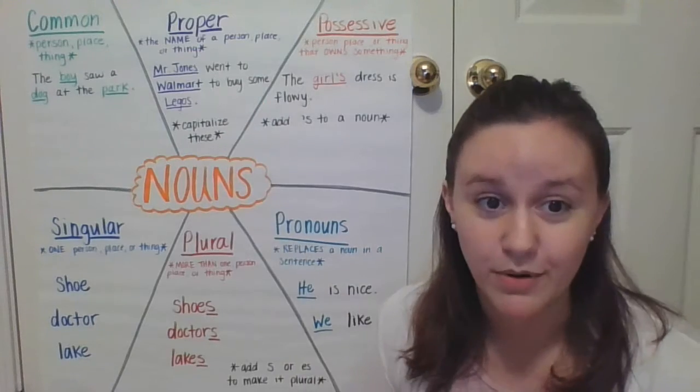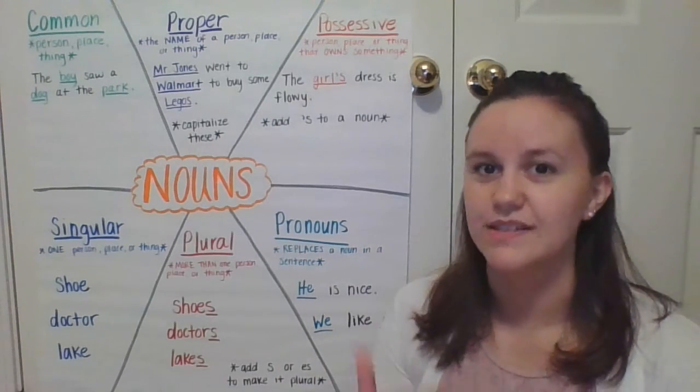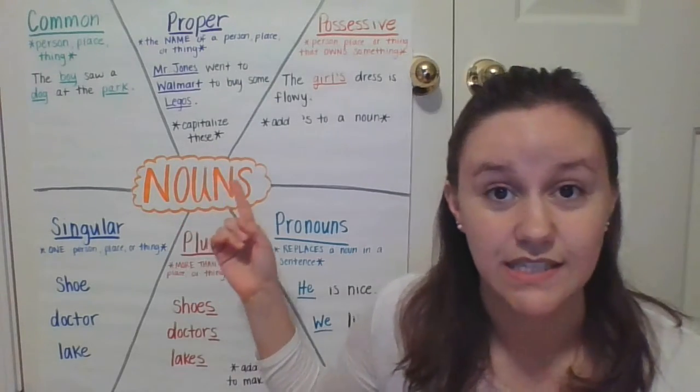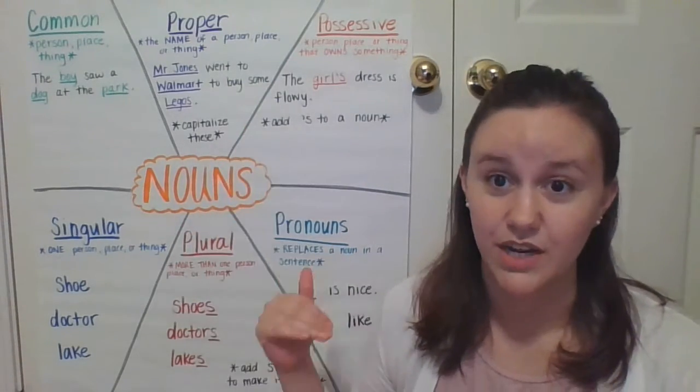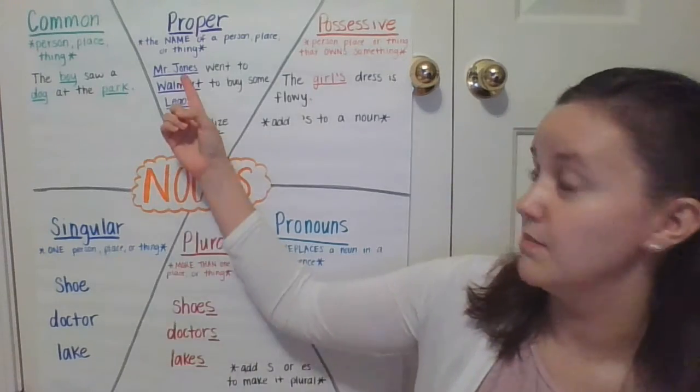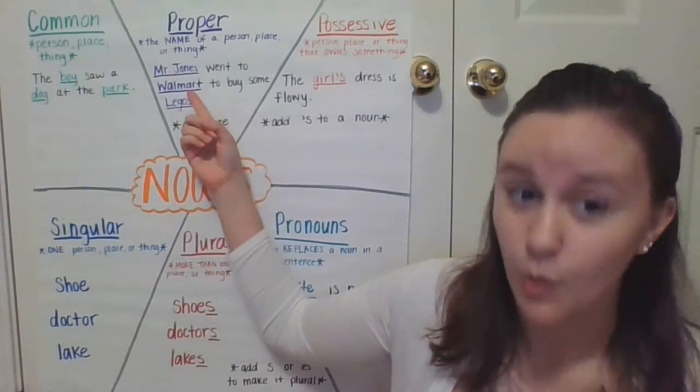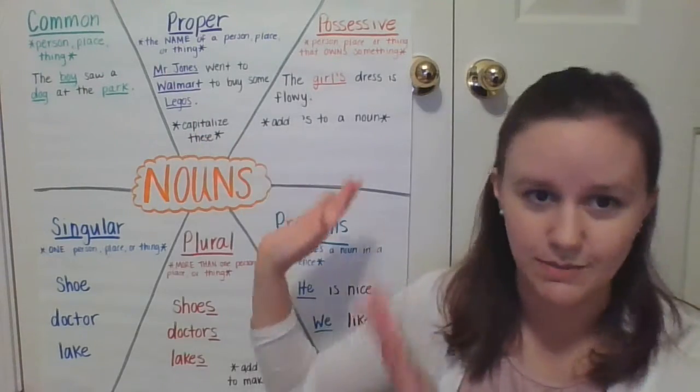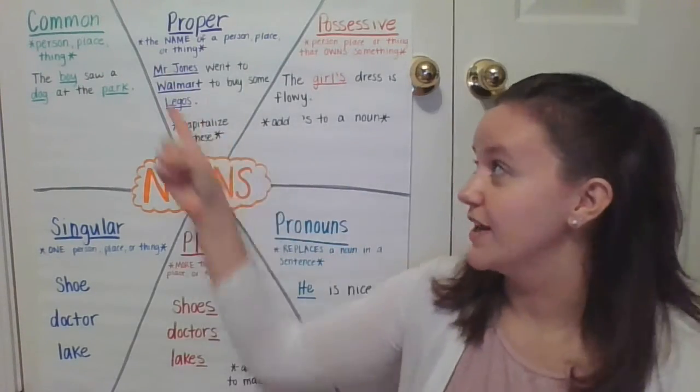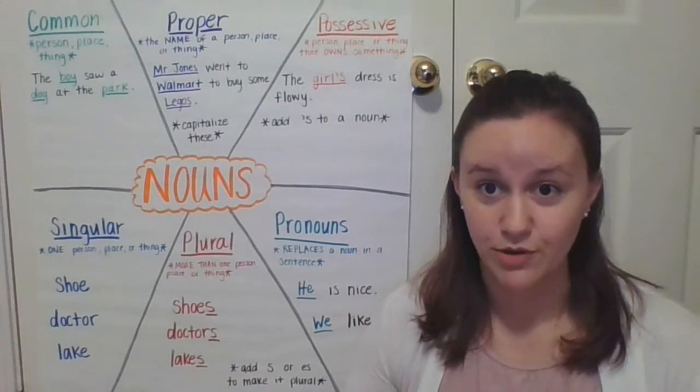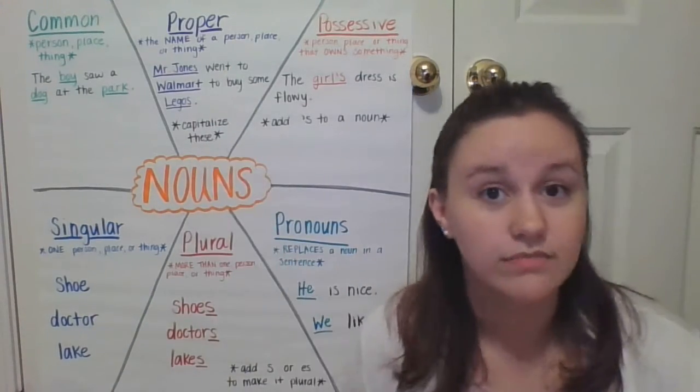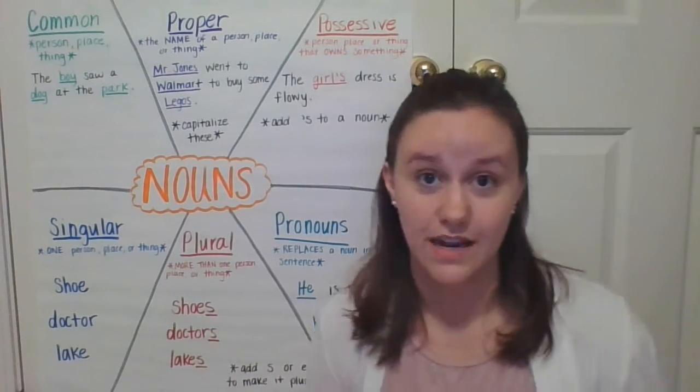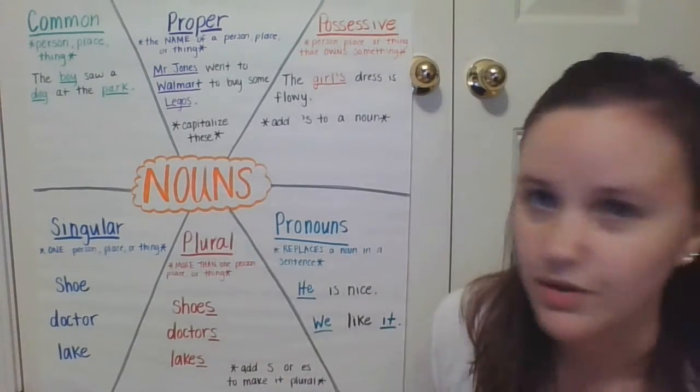Now a proper noun is the name of a person, place, or thing. The name of a noun. You capitalize these because it's going to be a name. Proper noun is a name. Like, Mr. Jones went to Walmart to buy some Legos. It doesn't say he went to the store to buy a toy. The proper nouns. Mr. Jones, that's a person's name, went to Walmart. That's the name of a place. To buy some Legos. That's the name of a thing. It's the name of something that they have to start with capital letters.